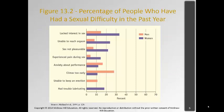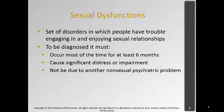This is the percentage of people who have had sexual difficulty in the past year. For women, a lot of it is related to interest, and for men it's related to premature ejaculation or being unable to keep an erection. A sexual dysfunction occurs when people have trouble engaging in and enjoying sexual relationships — physical, psychological, or a combination. To diagnose a sexual dysfunction, it has to occur most of the time for at least six months, cause significant distress or impairment, and not be due to another non-sexual psychiatric problem or medication side effects.